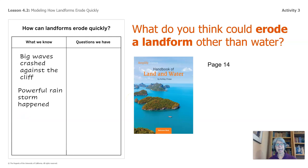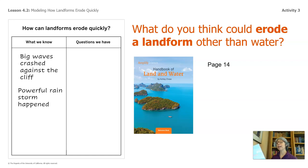Let's dig into the handbook of land and water. I found something on page 14 that I'd like to read aloud to you. How beaches can change fast. Sometimes erosion happens quickly. Beaches are made of sand or other loose material, so they are not as stable as some other landforms. One storm can erode a beach fast because a lot of material can move at once. If storm waves and gusts of wind hit a beach with enough power, they can carry away huge amounts of sand in a single day.